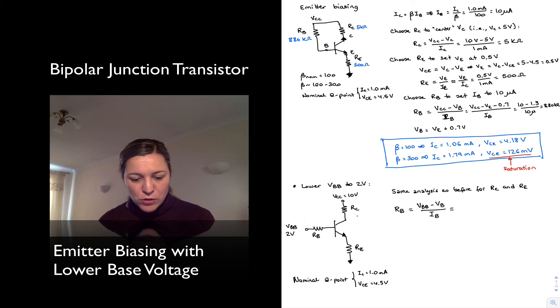And so that is 2 volts minus 1.3 volts—1.3 volts being the sum of the voltage drop across the emitter resistor plus the 0.7 volts across the Vbe junction—divided by 10 microamps. And that gives 80 kilo ohms.